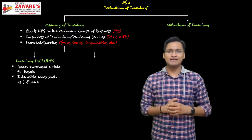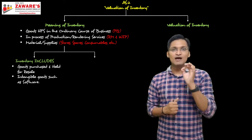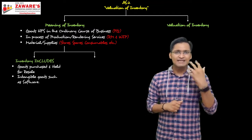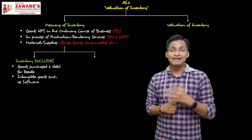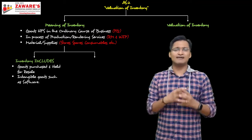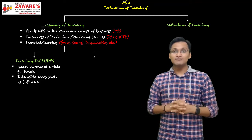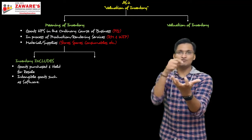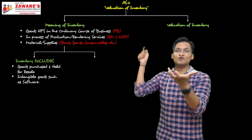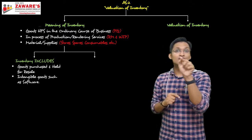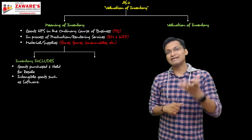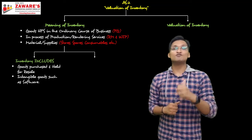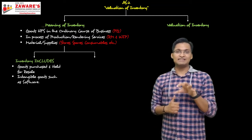Express inclusion number two: intangibles such as software. For a software or IT company, which is a service industry — they don't deal in tangible goods, they make software and deal in technology. Software is intangible; you can't see it. Even if software comes on a CD or DVD, that CD is a different thing — we're talking about the software itself. And if you download software online, there's no CD at all. So for a software company, software is also their inventory — expressly included in AS2.